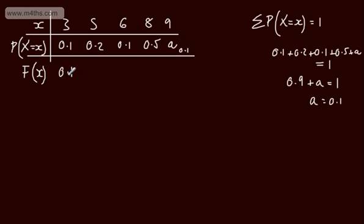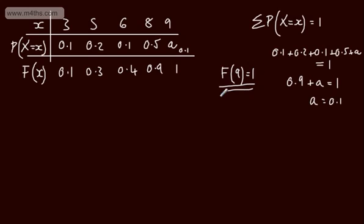Now let's build the cumulative distribution. F of 3 is the probability that x is 3 or less, which is just 0.1. F of 5 is going to be 0.3, because it's P of 3 plus P of 5. F of 6 is the probability that x is 6 or less — that'll be 0.4. Then we'll have 0.9, and then 1. F of 9 is going to be equal to 1 — the last value in our table will always give a value of 1.